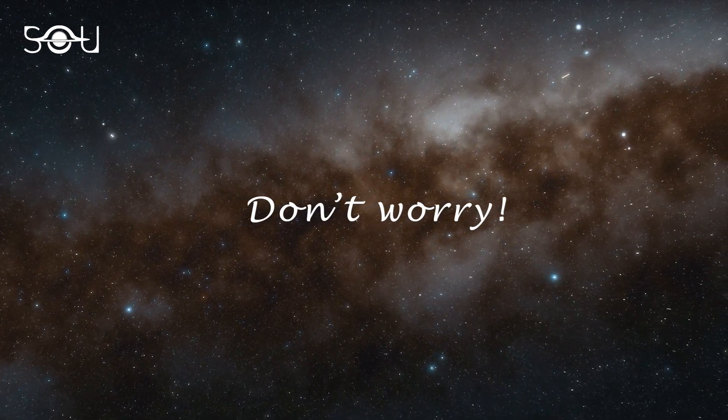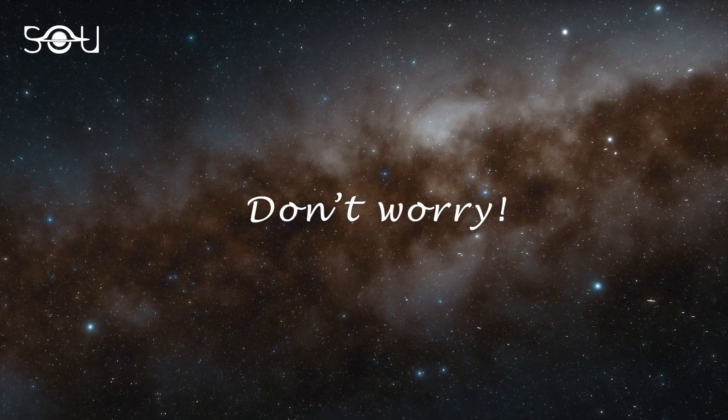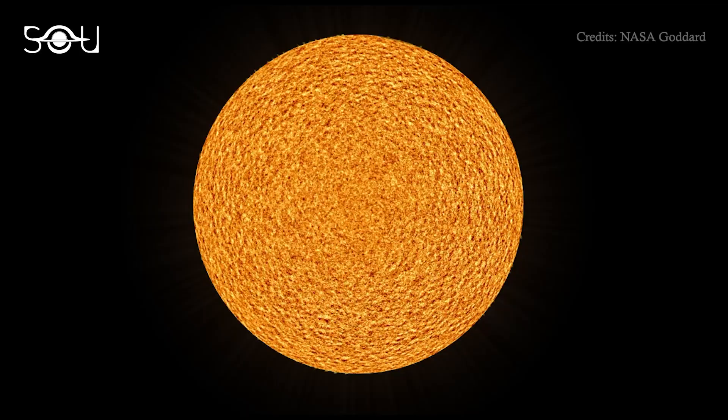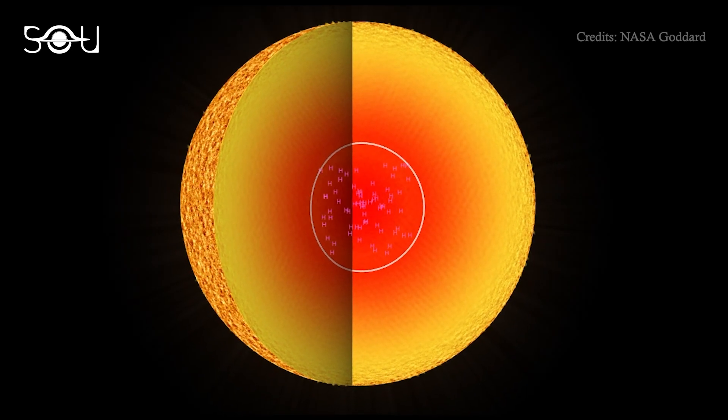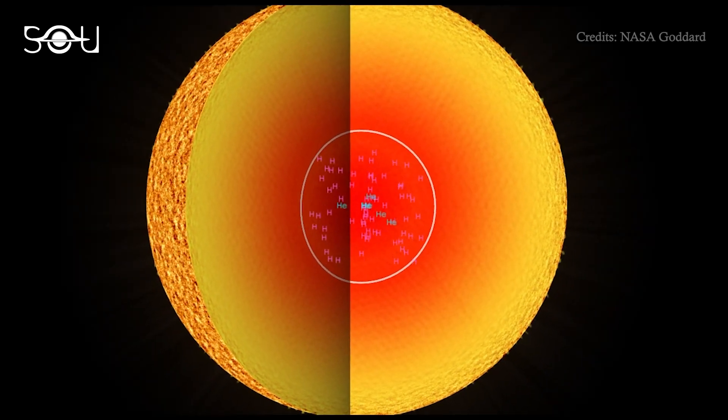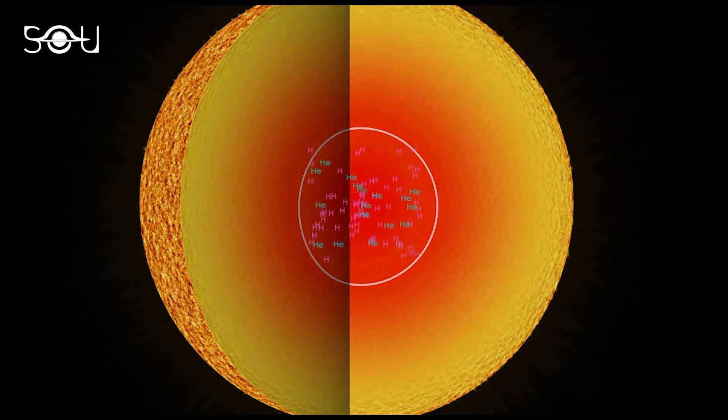Stars spend 90% of their life fusing hydrogen into helium in their cores. This crucial phase of their life is known as the main sequence. Our sun is a main sequence star.